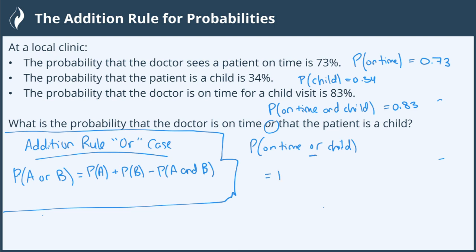So when I see the or case, I know I'm going to take the probability of the first that he's on time. I'm going to add to that the probability of the second, the child. And then I'm going to subtract the probability of both on time and child. Okay, I'm running out of space.